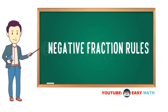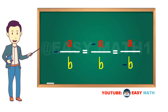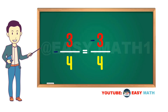Negative Fraction Rules — we have three negative fraction rules in math. Rule number one: negative a divided by b is the same as negative a divided by positive b, and also positive a divided by negative b. We can write this in three different ways. For example, negative three quarters is equal to negative three divided by positive four, and also positive three divided by negative four.